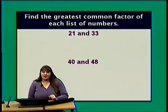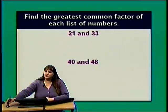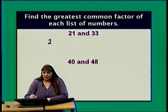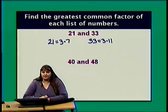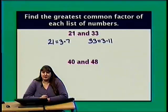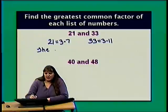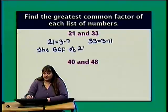Let's find the greatest common factor of each list of integers. First, 21 and 33. 21 can be written as 3 times 7 — both prime. 33 can be written as 3 times 11 — both prime. Each has a factor of 3 in common, so 3 is the greatest positive number that divides evenly into 21 and 33. The GCF of 21 and 33 is 3.